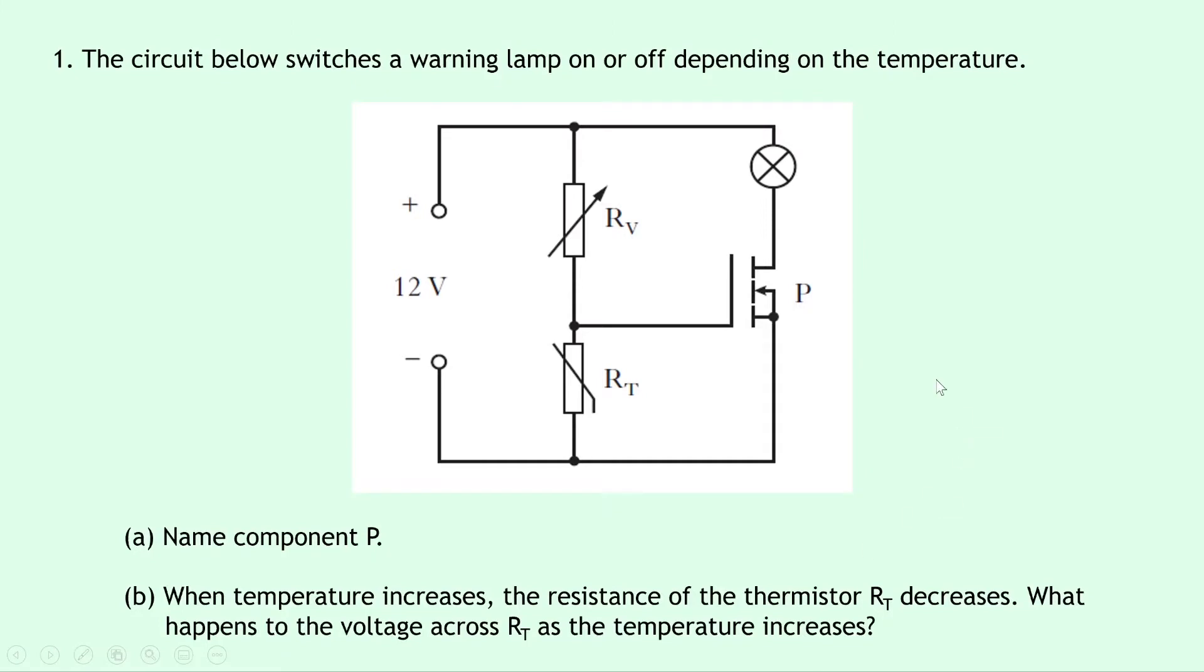Question one says that the circuit below switches a warning lamp on or off depending on the temperature. You'll see we have a 12 volt battery, a variable resistor and a thermistor, and then we have a bulb next to component P. Part A says to name component P.